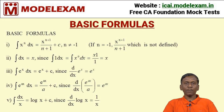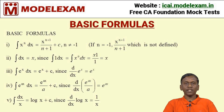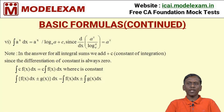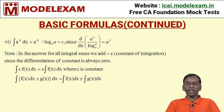The fourth formula: the integral of e^(ax) dx is equal to e^(ax) divided by a plus c, since the differentiation of e^(ax) divided by a is equal to e^(ax). The seventh formula: the integral of c·f(x) dx is equal to c times the integral of f(x) dx, where c is a constant. And the integral of [f(x) ± g(x)] dx is equal to the integral of f(x) dx plus or minus the integral of g(x) dx.